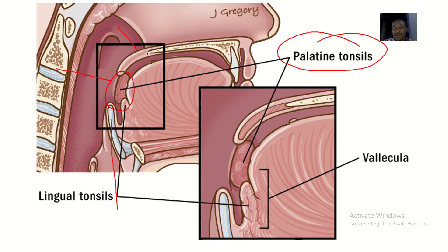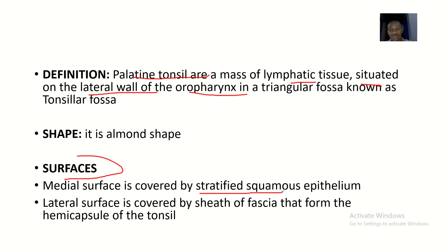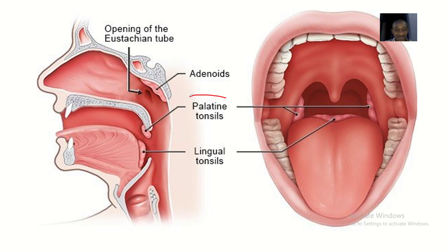If you know the anatomy of the nasopharynx, oropharynx, and laryngopharynx, it will help you — we have videos on those coming. The palatine tonsil is situated on the lateral wall of the oropharynx in a triangular fossa known as the tonsillar fossa. The shape of the palatine tonsil is almond-shaped. It has surfaces: the medial surface, which is covered by stratified squamous epithelium, and the lateral surface, which is covered by sheets of fibrous tissue that form the hemicapsule of the tonsil.